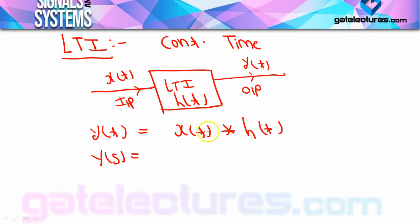आज से याद रखना है कि जब भी time domain में convolution होगा, Laplace domain में हमेशा multiplication होगा। इसका opposite भी true है — जब भी Laplace domain में convolution होगा तो time domain में multiplication हो जाएगा। मतलब जब भी एक domain में multiplication है तो opposite domain में convolution, और अगर एक domain में convolution है तो opposite domain में multiplication। Convolution की definition अभी पता नहीं है तो wait करिए — numericals में, especially graphical method में discrete के समय, definition बिल्कुल clear हो जाएगी। अभी के लिए, जिस तरीके से आप दो numbers को multiply करते हैं, उसी तरीके से दो signals का multiplication है, लेकिन यह कुछ different type का multiplication है जिसे हम numerical में study करेंगे।